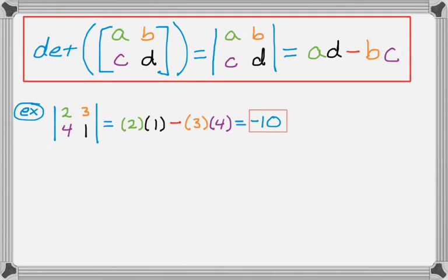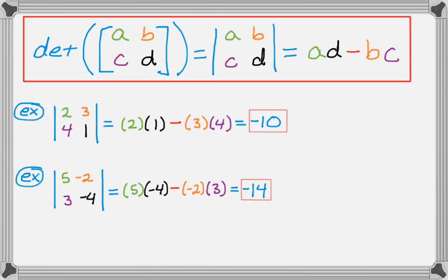We can do another example. 2x2 determinants are not really that challenging to be honest. So it's going to be 5 times negative 4, and then minus negative 2 times 3. I like to put everything in parentheses so I don't get lost in a sea of negative signs. So we have this, and then that gives us negative 14. That's all there is to calculating a 2x2 determinant.